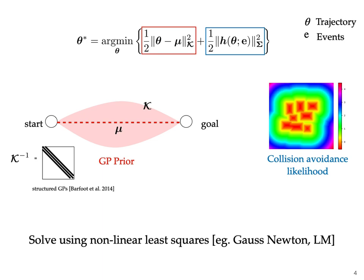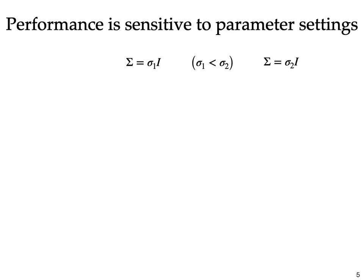In practice, the performance of the planner can be highly sensitive to the parameter settings such as sigma, the covariance on the obstacle factors. To get a more intuitive view of this, consider two fixed values of sigma, sigma1 and sigma2, with a larger sigma corresponding to a lower weight on obstacle avoidance. These values are generally hand-tuned.